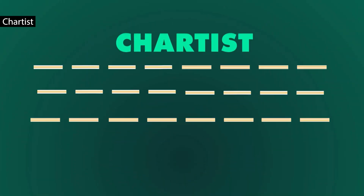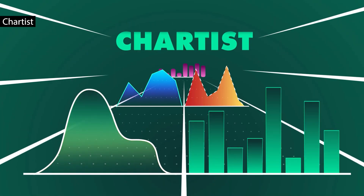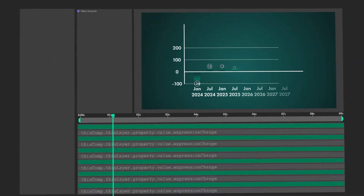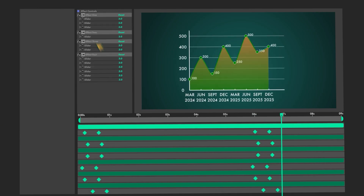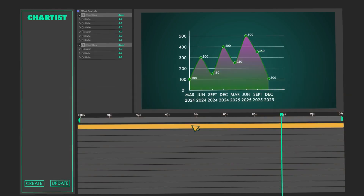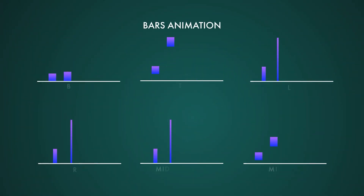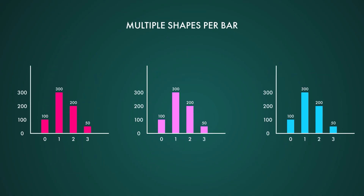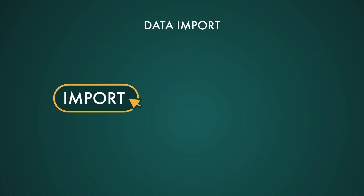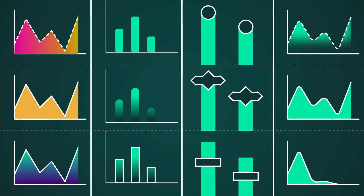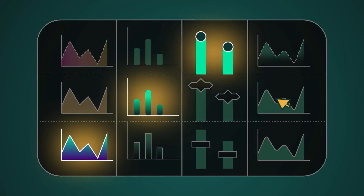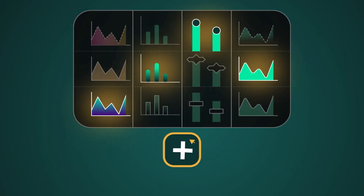Chartist is a fast, flexible chart building toolkit for After Effects designed for high-performance data visualizations. It lets you create bar graphs, line graphs, and heat maps with advanced keyframe-based animations and zero expressions for smooth previews and renders. Import CSV data or paste values instantly, customize every visual detail, and control entire charts from a single master comp, making professional, brand-ready infographics quick and effortless.